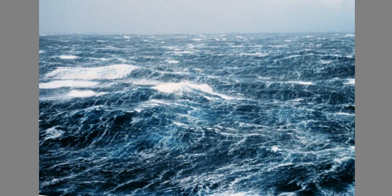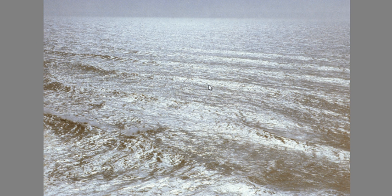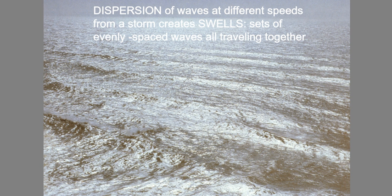If you let the waves travel away from a storm, the ocean looks really different. It ends up looking like this — a set of very evenly spaced waves, all with the same wavelength and the same period, traveling at the same speed. That process is called dispersion.